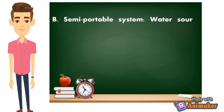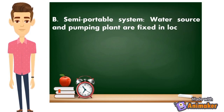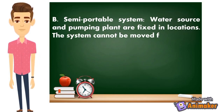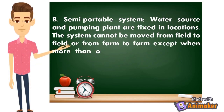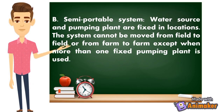B. Semi-portable system — the water source and pumping plant are fixed in location; the system cannot be moved from field to field or from farm to farm, except when more than one fixed pumping plant is used. The other parts aside from the water source and pumping plant are not fixed, so we can consider it as a semi-portable system — some parts can still be moved from one field or farm to another.